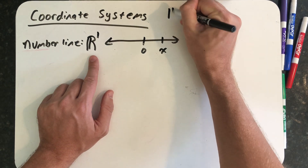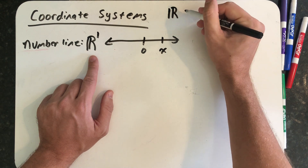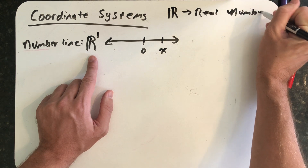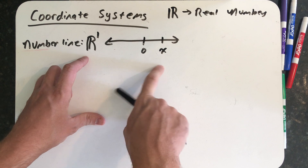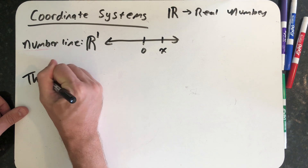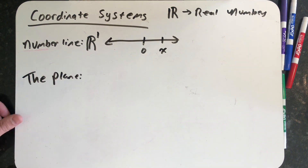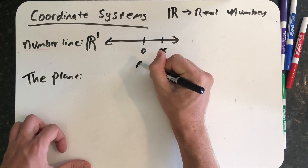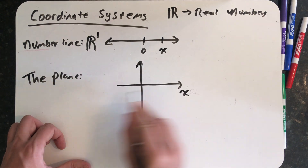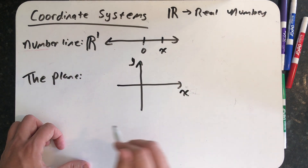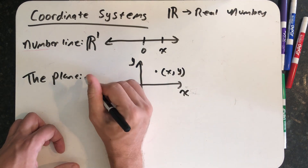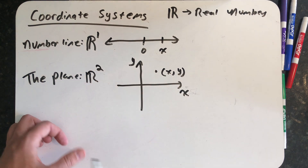That's our symbol for the real numbers — a double-barred R — that you've likely seen before. In one dimension, we have a number line, and we simply need one piece of information to locate a value. In a lot of math and algebra classes, you have plotted things or considered equations in the plane: an x-axis, which is a real number line, and a y-axis, also a real number line. We would need two pieces of information to locate a point in the plane, and we'd call this R2.